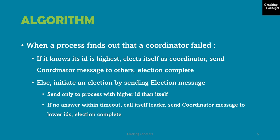Looking into the algorithm: when a process finds out that a coordinator has failed — usually through a failure detector — it takes its ID and checks if it is the current highest ID. If it is, it will elect itself as the coordinator and send coordinator messages to all processes with a lower ID than itself, and thus the election is completed. If it doesn't have the highest ID, it will initiate an election by sending an election message.